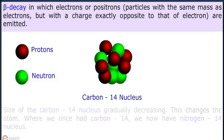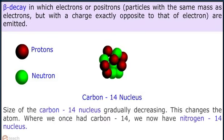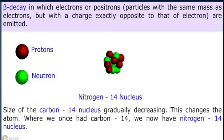The neutron gets transformed into a proton and the emitted electron moves away from the atom. The size of the carbon-14 nucleus gradually decreases. This changes the atom — where we once had carbon-14, we now have a nitrogen-14 nucleus.